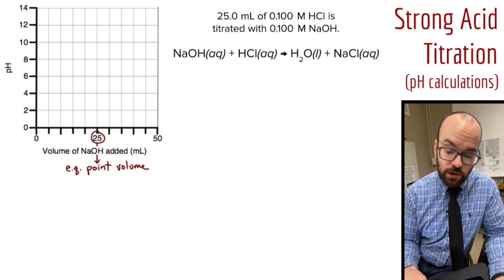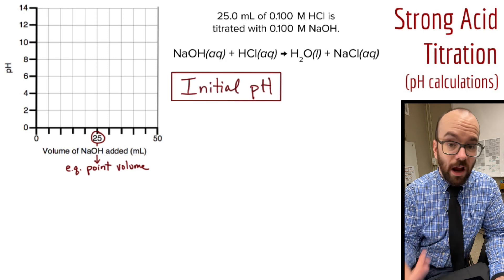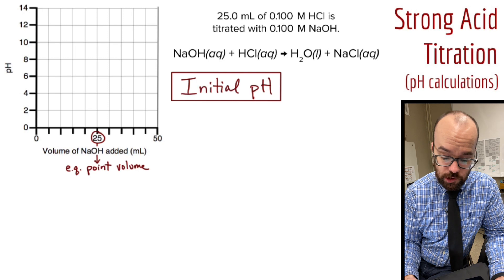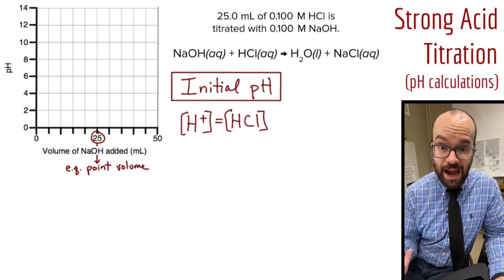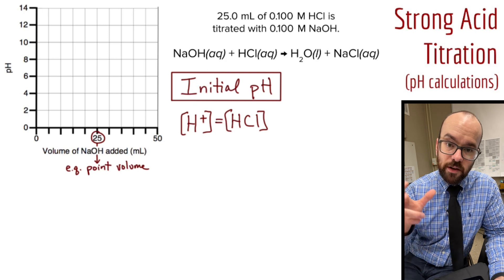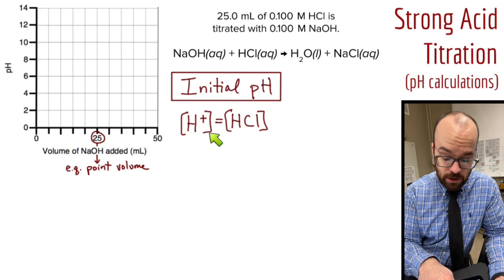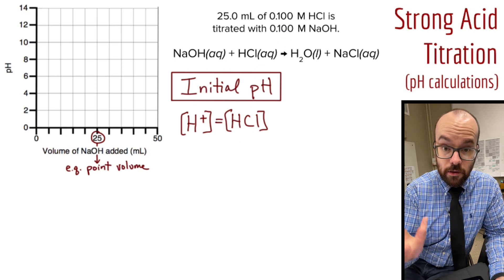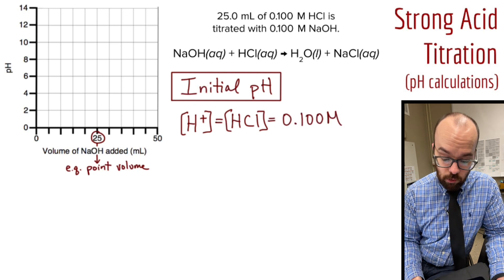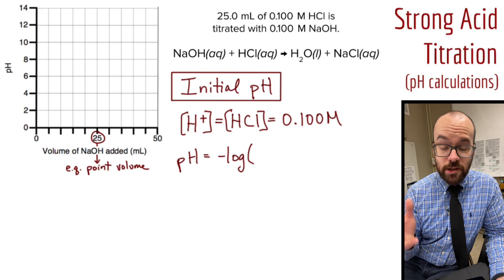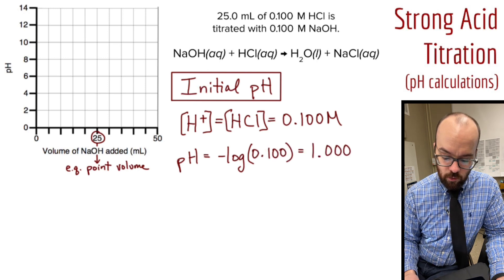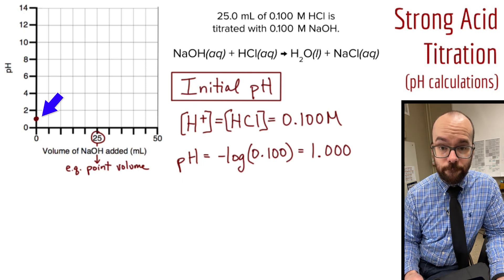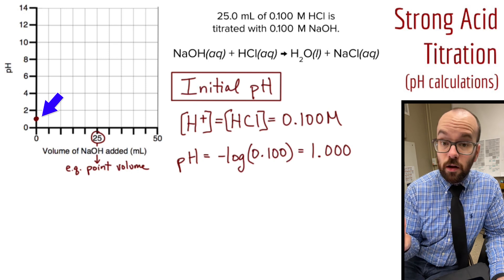Now I'm going to do my first pH calculation — the pH at the very beginning, before I've added any base at all. All we have is HCl present. Since hydrochloric acid is a strong acid, all of the HCl dissociates into H⁺ and Cl⁻. So my H⁺ concentration equals my HCl concentration, which is 0.1 molar. I take the negative log of 0.1 molar and I get a pH of 1.000. That's my pH at the very beginning — with a strong acid, I just take the negative log of the molarity.